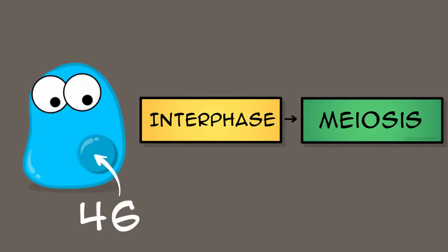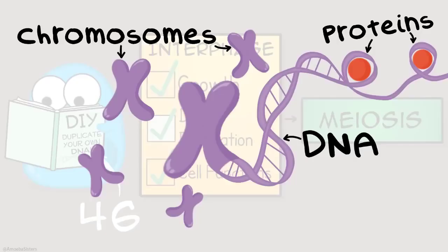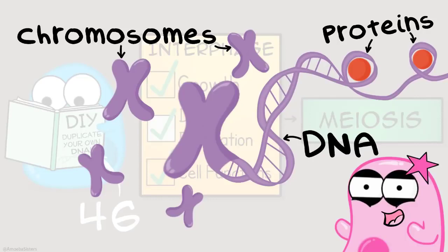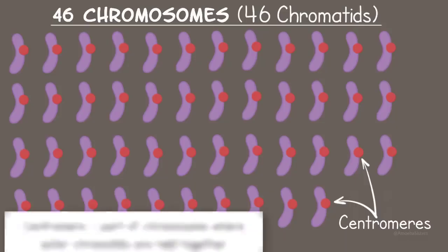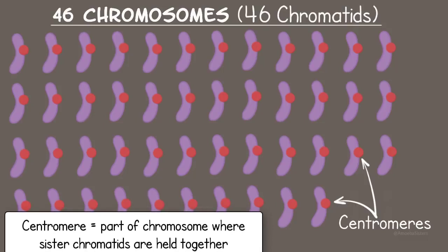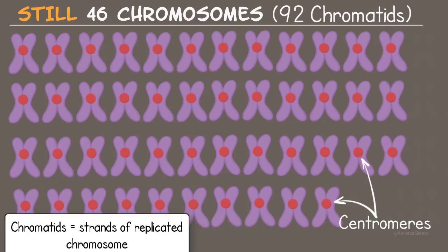So the starting cell has 46 chromosomes, and you have to duplicate those chromosomes in interphase before meiosis starts. That basically means you are duplicating your DNA since chromosomes are made of DNA and protein. Ready for the tricky part? Well, because we tend to count chromosomes by the number of centromeres present, when the 46 chromosomes duplicate, we still say there are 46 chromosomes.